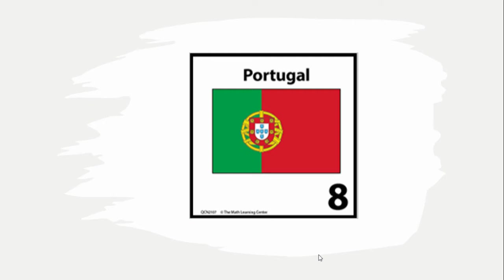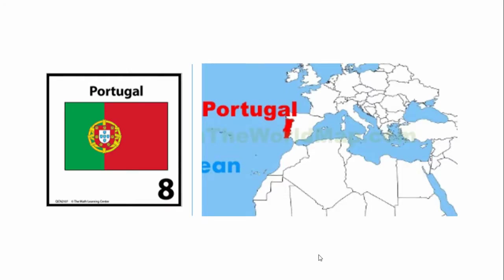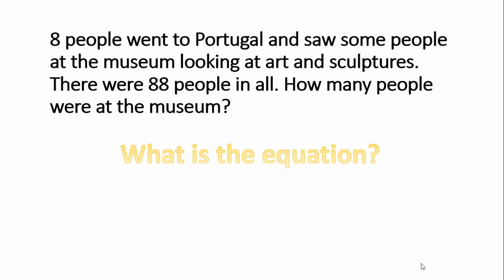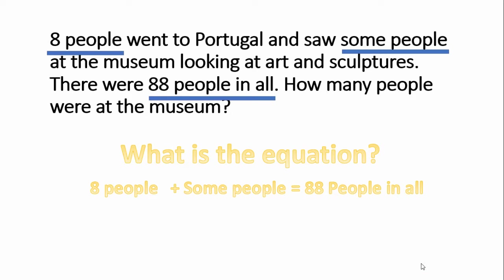Here's a look at today's calendar marker. Pause the video and discuss your observations with your learning coach. Here's a look at Portugal with the map of Portugal. Eight people went to Portugal and saw some people at the museum looking at art and sculptures. There were 88 people in all. How many people were at the museum? It's asking how many people were at the museum. We know there are eight people and some people at the museum, which gives us a total of 88 people in all. So our equation is eight plus blank equals 88. If you said 80, you're correct.